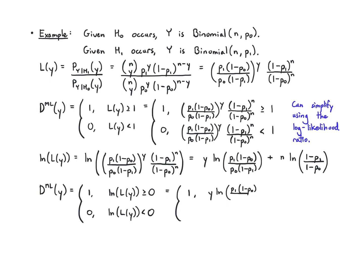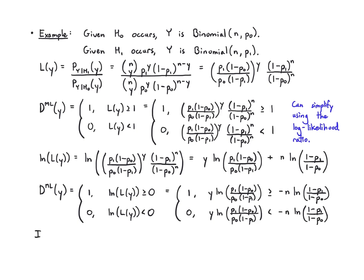Even though this seemed a little abstract, it's actually a more powerful version of something we did in a previous video. In that video, we looked at a special case using a table, where Y was Binomial with n = 3, P0 = 1/2, and P1 = 3/4. I'm going to plug in all those values into the log likelihood ratio.